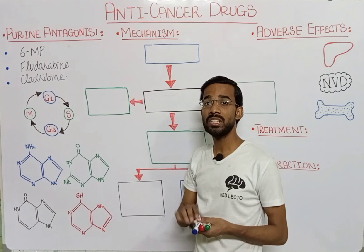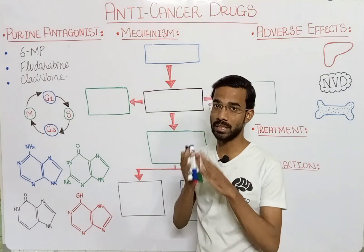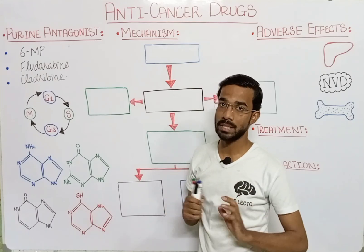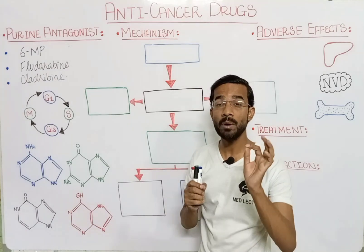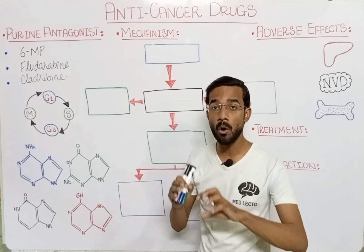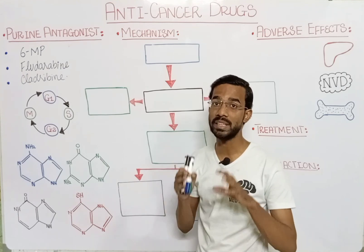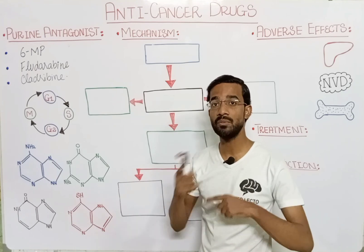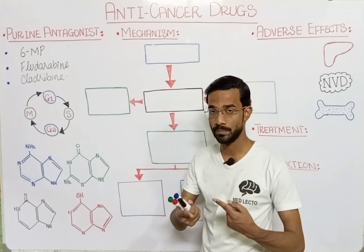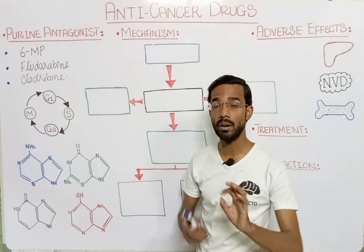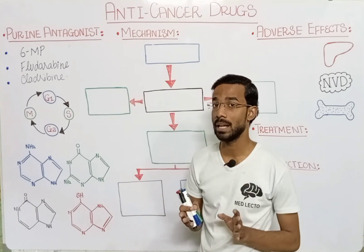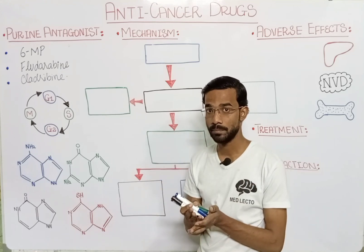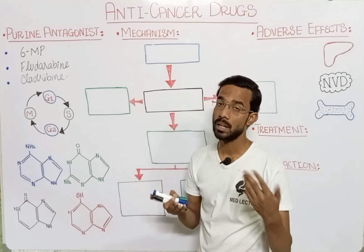Let's focus on the basic things. Cancer is basically the growth of abnormal cells in our body. The main focus is to stop the growth of cancer. As we know, cells divide through the cell cycle, so if I stop or destroy the cell cycle, I can stop the cell division that actually causes cancer.